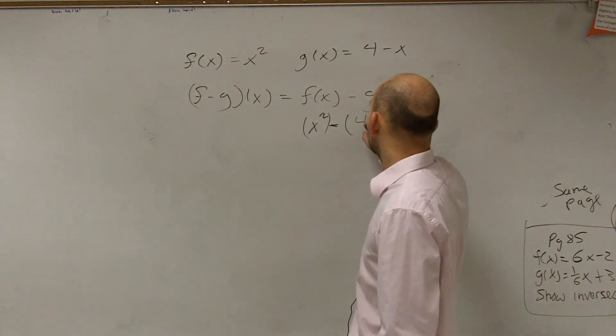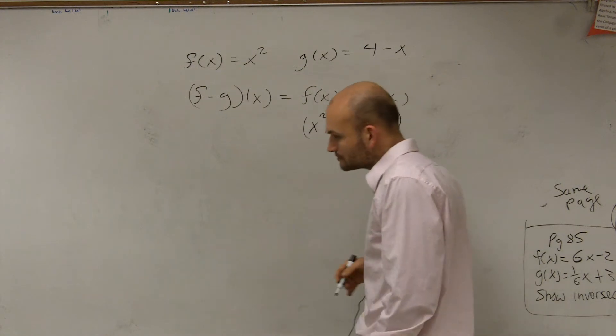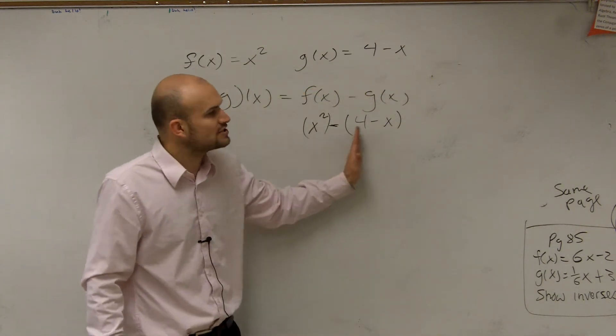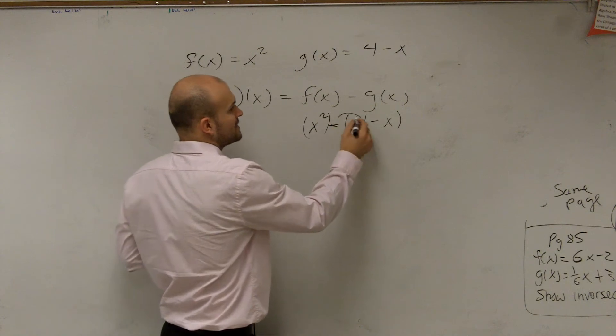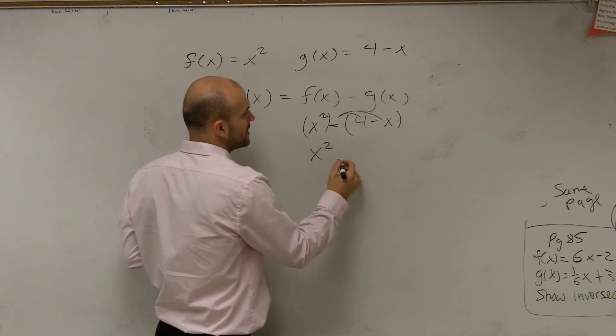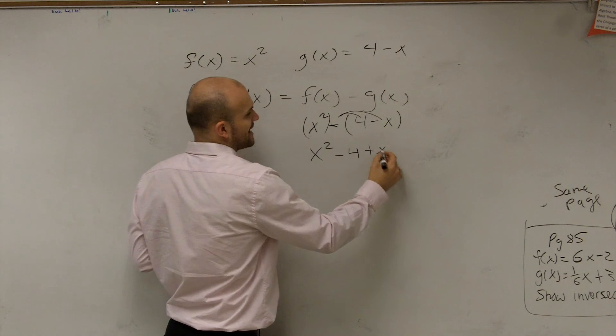So therefore, my g of x is 4 minus x. Now I notice that I'm subtracting this whole term. So by applying distributive property, I'm going to have x squared minus 4 plus x.